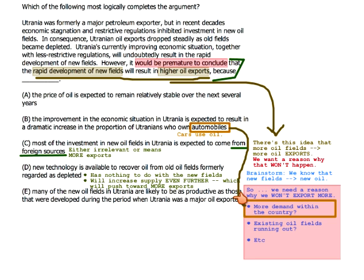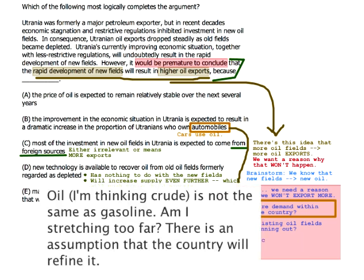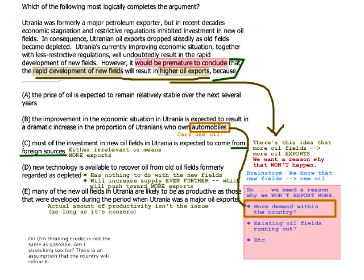This would be the wrong way. And the last choice — productivity is not so much an issue, because as long as they have any productivity at all, the actual amount of productivity isn't the issue, as long as it's not zero. When you think about connections like this, you've got to think about the reasonableness of the connections. The wrong answers are so wrong that these kinds of things should be non-issues.